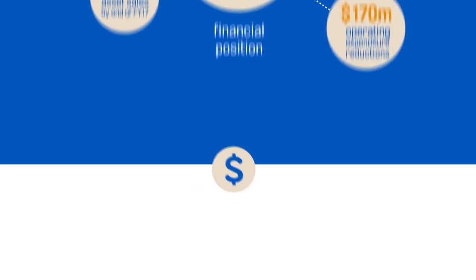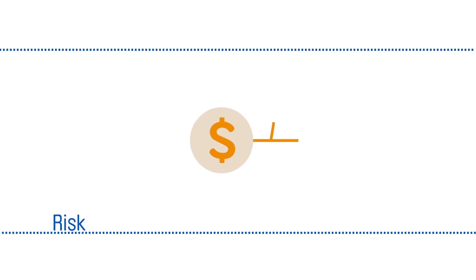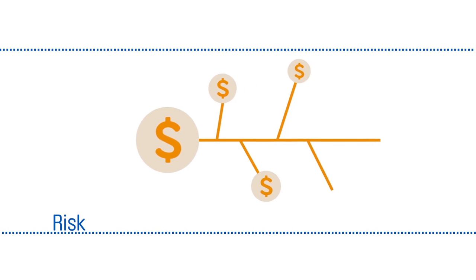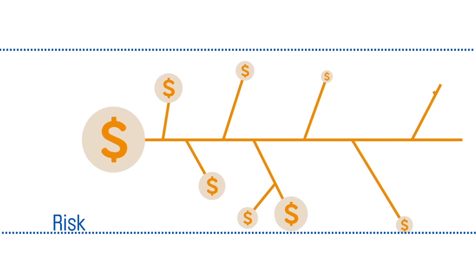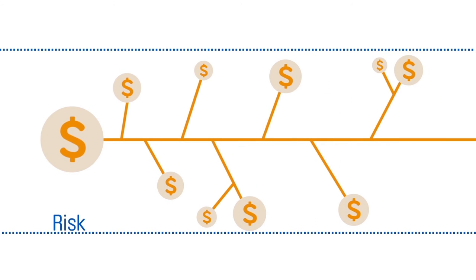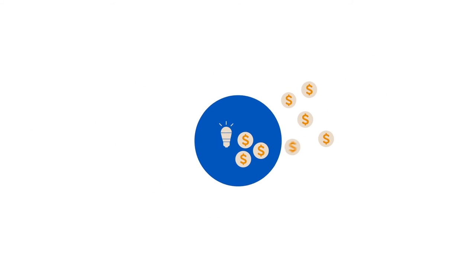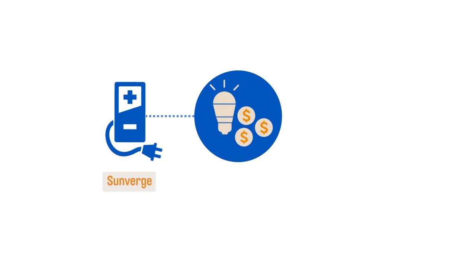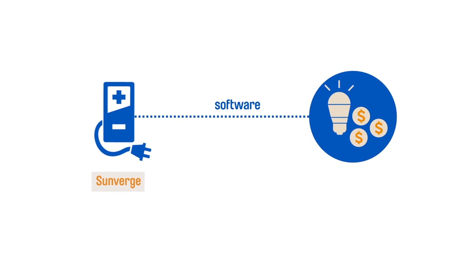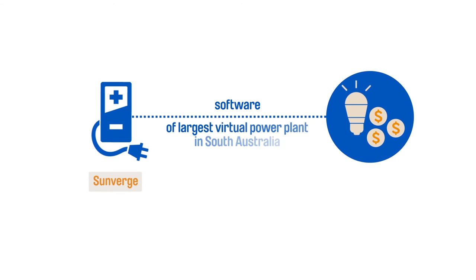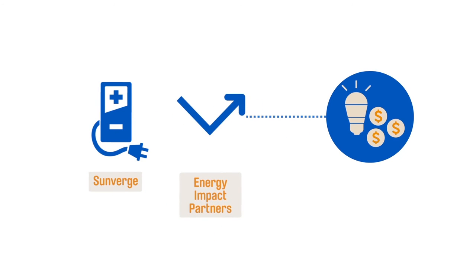And as we think about how to allocate capital for growth, we're making choices that will help us manage risk and provide value to shareholders as we go. For example, we've made several technology-led investments that can help us serve customers better. These include Sunverge, the software that is enabling our development of the world's largest virtual power plant in South Australia and now Energy Impact Partners.